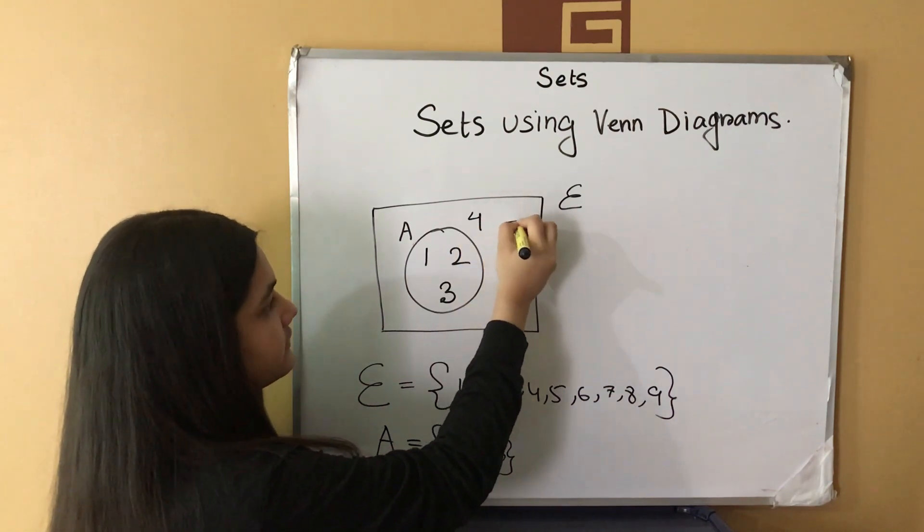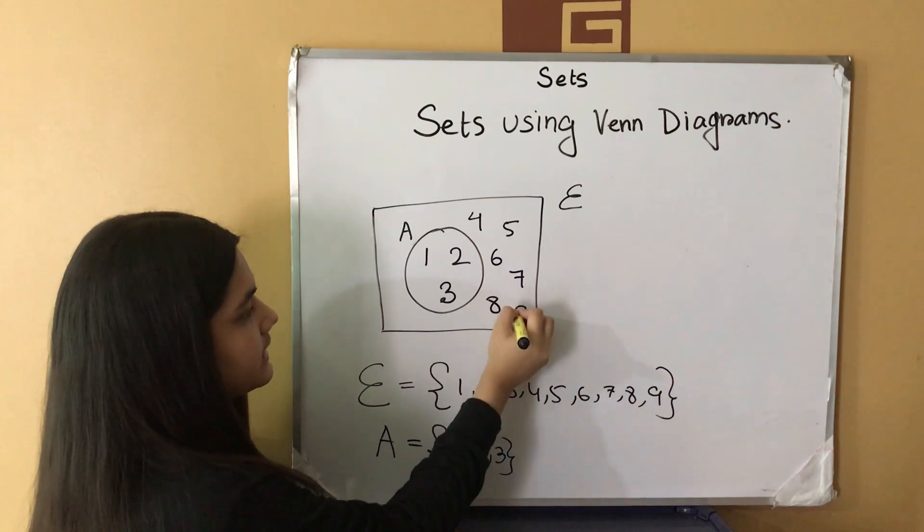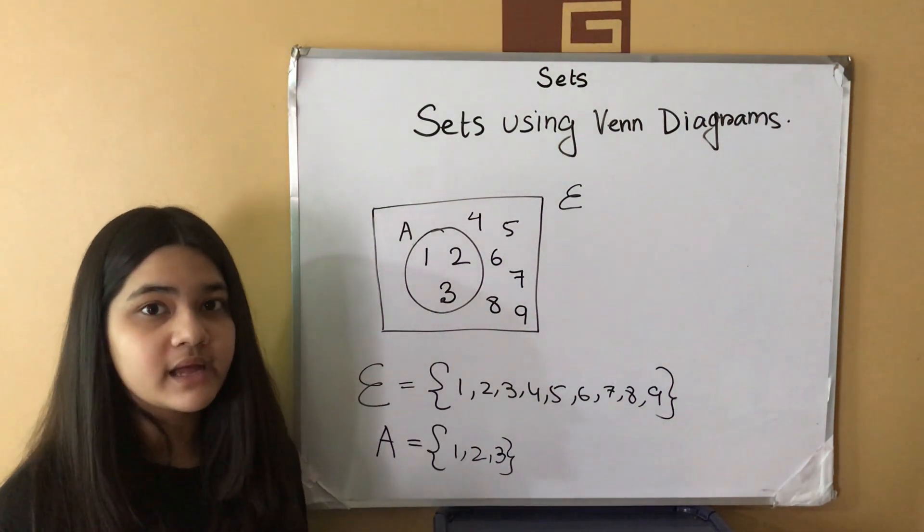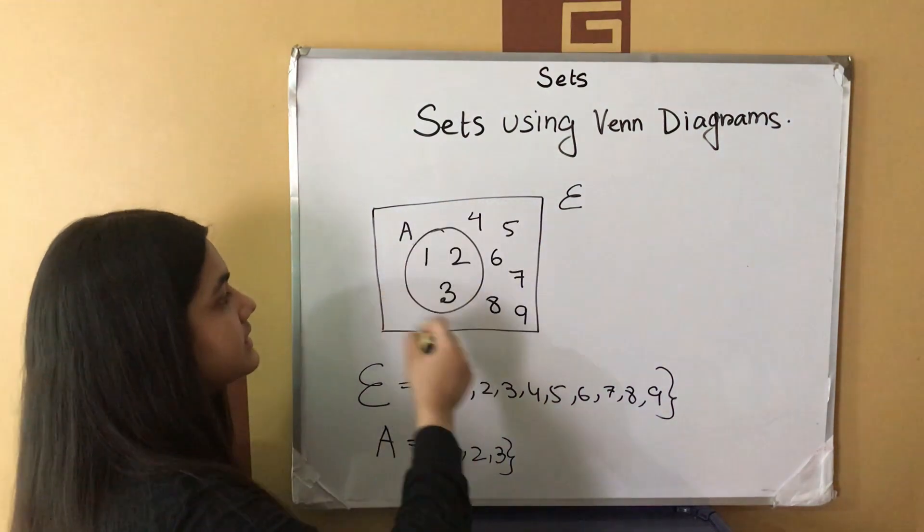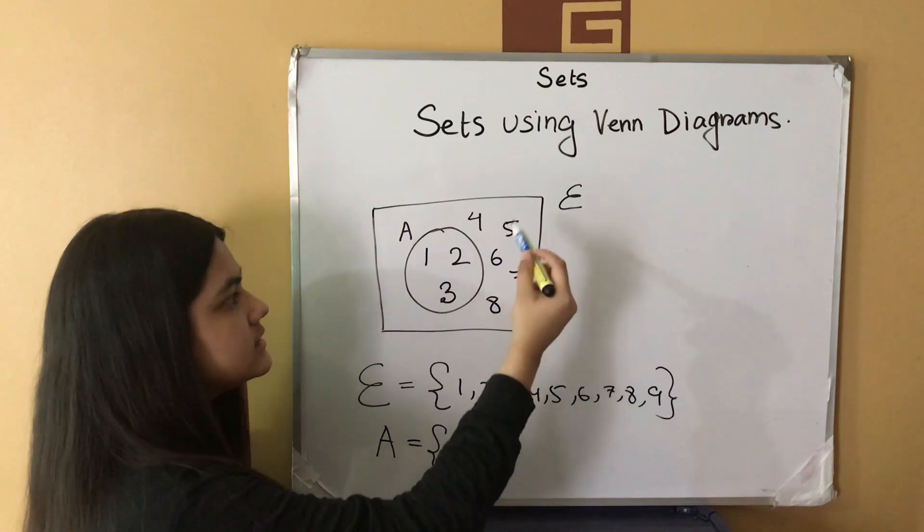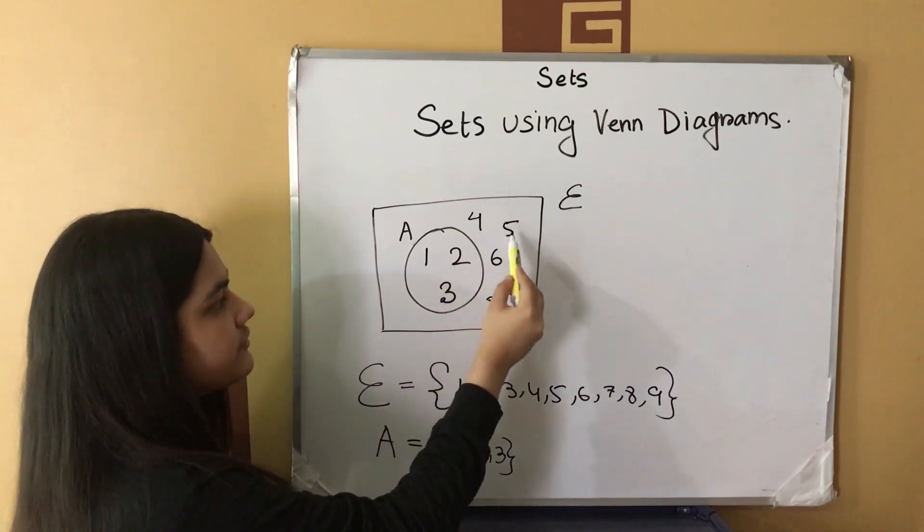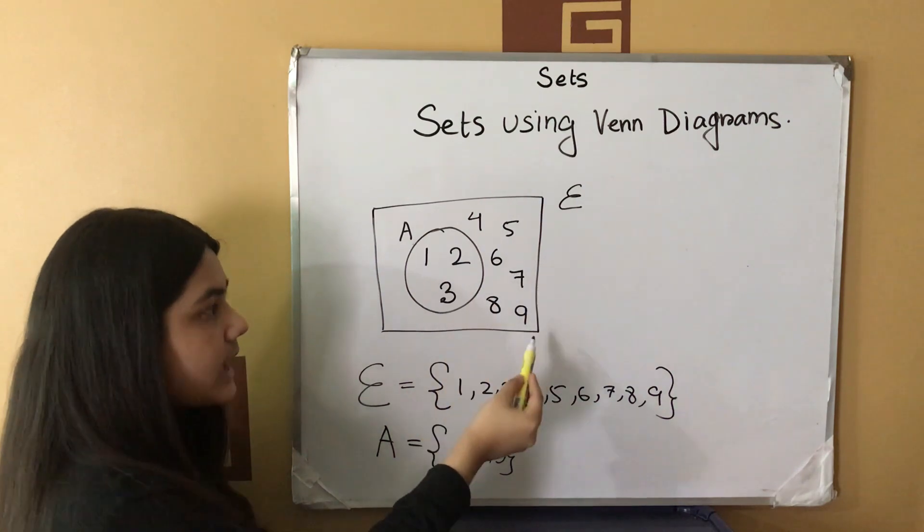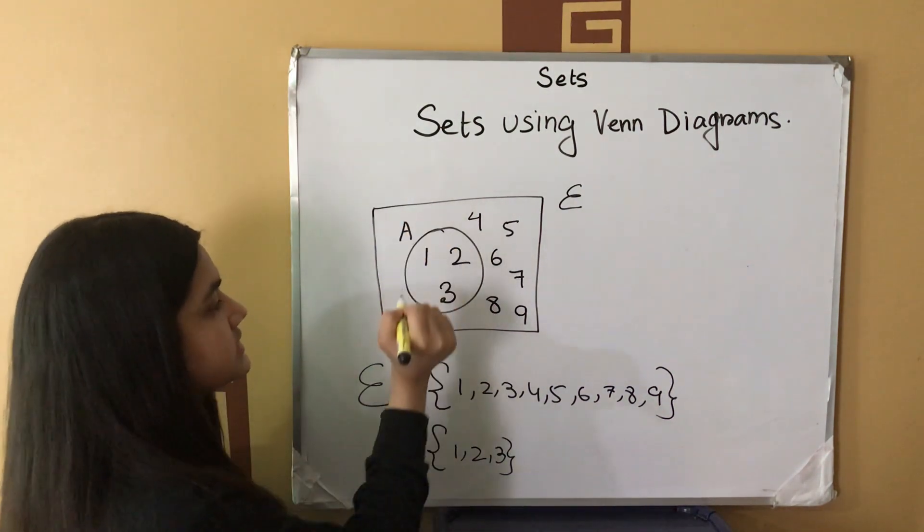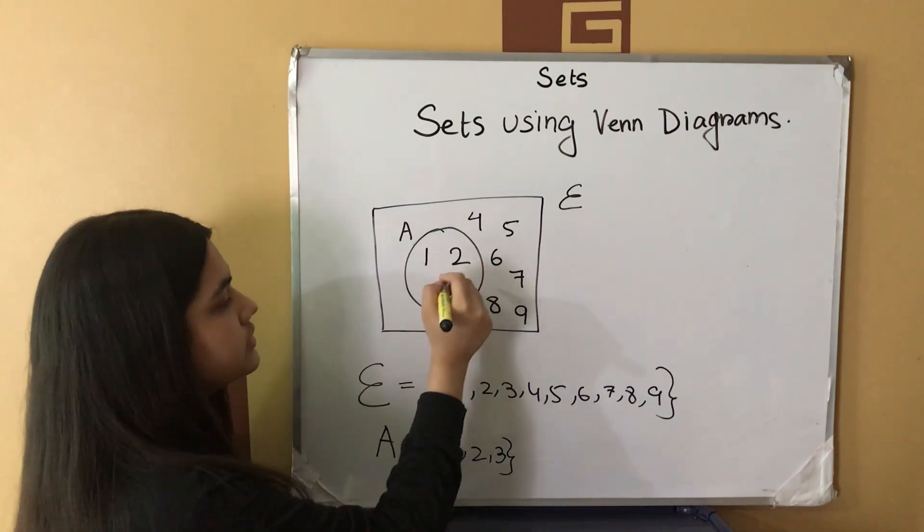And, the rest of the elements we will write within the rectangle but outside the circle: 4, 5, 6, 7, 8 and 9. This means that all the elements inside this rectangle belongs to the universal set. That means the universal set contains the elements 1, 2, 3, 4, 5, 6, 7, 8 and 9. Whereas, the set A contains only the elements 1, 2 and 3.